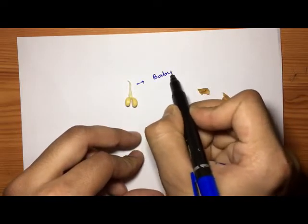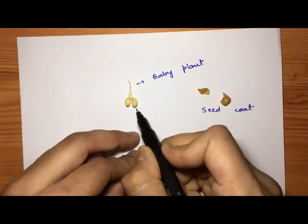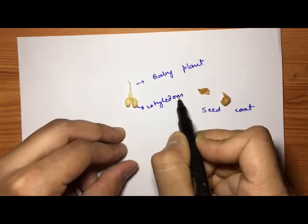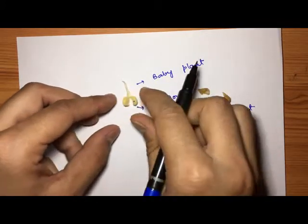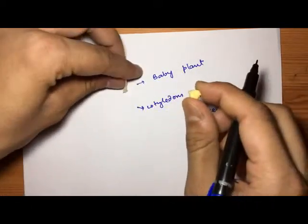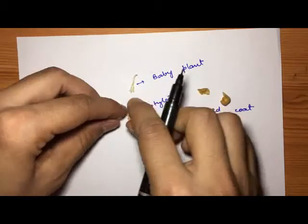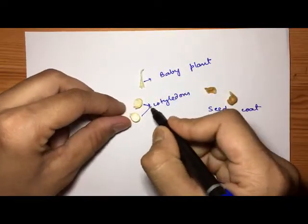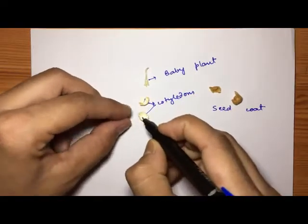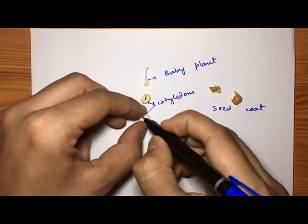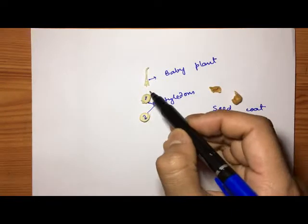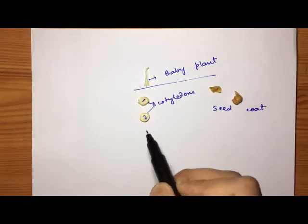This is the baby plant and these are my cotyledons. How many cotyledons do we have here? I am just peeling it out, breaking it. This is my baby plant and there are two cotyledons. I am giving it a number: this is my first, this is my second.